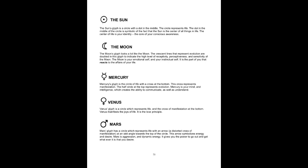The Moon. The Moon's glyph looks a lot like the moon. The crescent lines that represent evolution are doubled in this glyph to indicate the high level of receptivity, perceptiveness, and sensitivity of the moon. The moon is your emotional self and your instinctual self — the part of you that reacts to the affairs of your life.